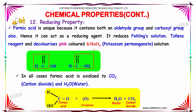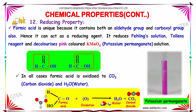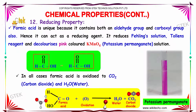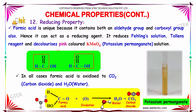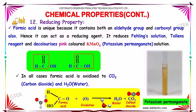Reducing property. Formic acid is unique because it contains both an aldehyde group and a carboxylic group. Hence it also acts as a reducing agent — it gets oxidized in a reaction. It gives a positive result for Fehling's test, Tollens' reagent, and decolorizes pink-colored KMnO4 solution. In all cases, formic acid is oxidized to CO2. That is, formic acid on oxidation produces water and carbon dioxide.